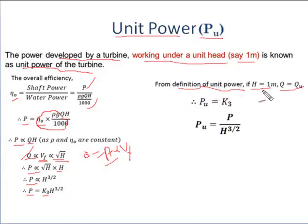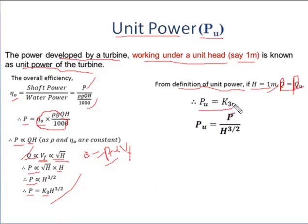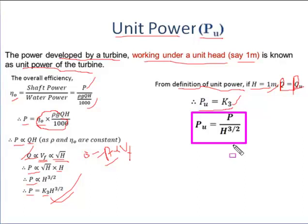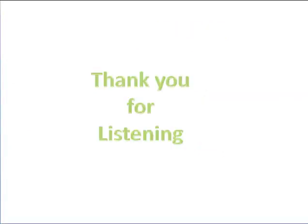From the definition of unit power, if H = 1 meter then P = P_u, the unit power of the turbine. Substituting this value, P_u = K₃. Putting this value back into the equation, we get P_u = P / H^(3/2). Thank you for listening.